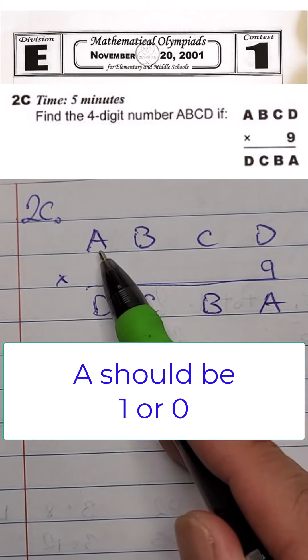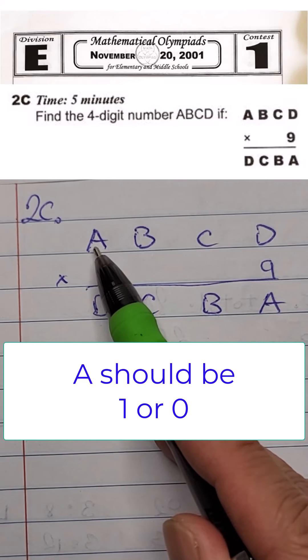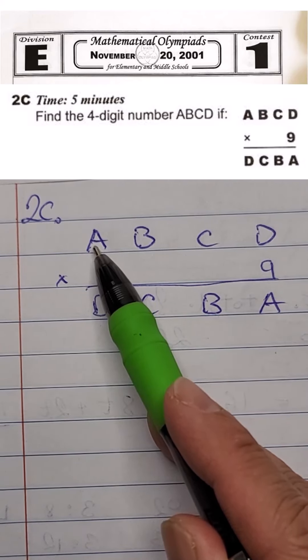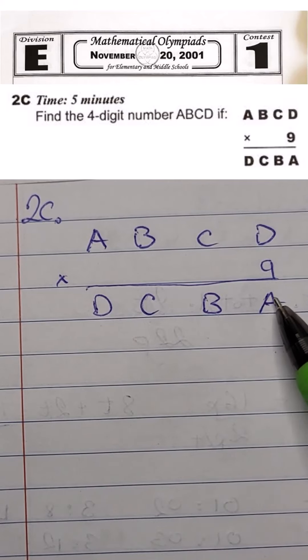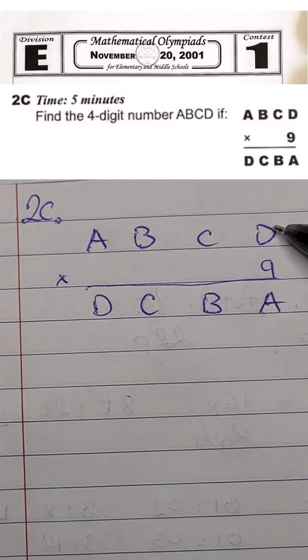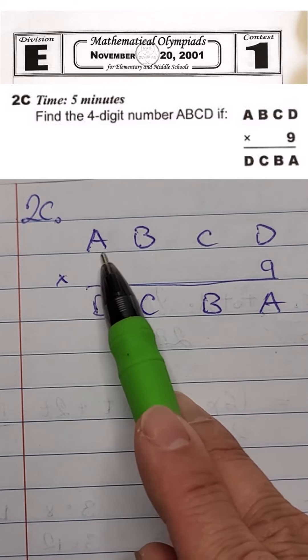Therefore, A should be 1 or 0. Let's assume A is 0. For A to be 0 at the end, 9 must multiply by 0. But 0 is A, and we multiply by D. Therefore, A cannot be 0. It has to be 1.